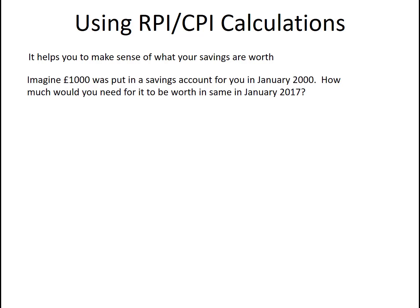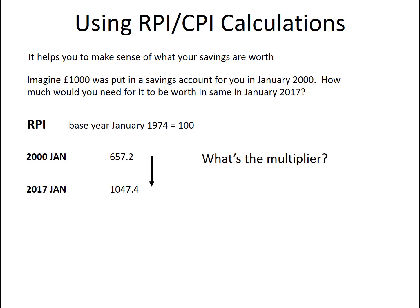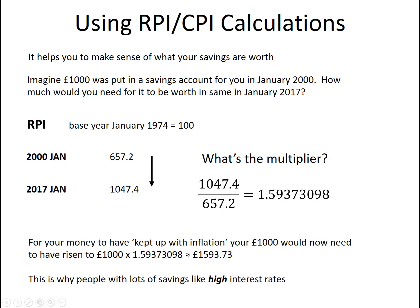Let's imagine that £1,000 was put into a savings account for you back in January 2000. How much would you need for it to be worth the same — that is, buy the same amount of stuff — in January 2017? We look up January 2000: RPI 657.2. Then we look up January 2017 and see that RPI is at 1047.4. We work out a multiplier, and then we simply multiply £1,000 by that figure and get £1,593.73. So if your money had been put in a savings account, for the value of it to have kept up with inflation, that original £1,000 would now need to have gone up to £1,593.73 — and it wouldn't really be any more money; you'd be able to do exactly the same things with it. It just reflects the way prices have gone up.